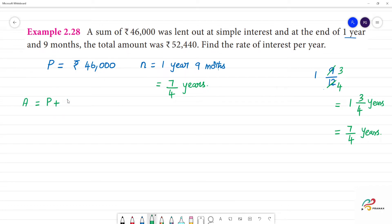Principle plus interest is amount. Amount is ₹52,440, which equals ₹46,000 plus I. Interest is ₹52,440 minus ₹46,000, which equals ₹6,440.